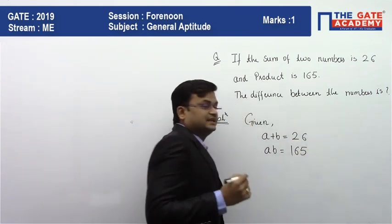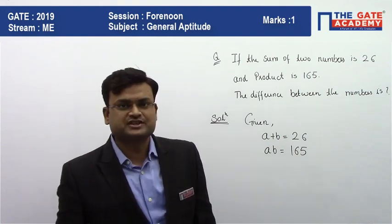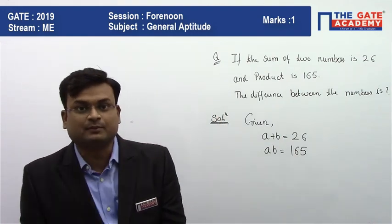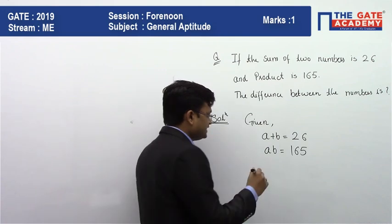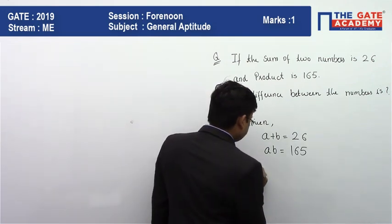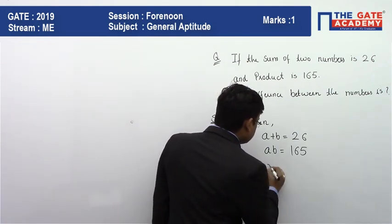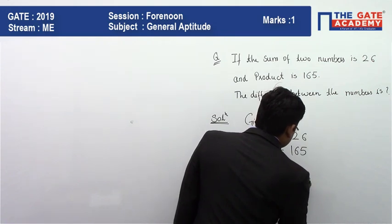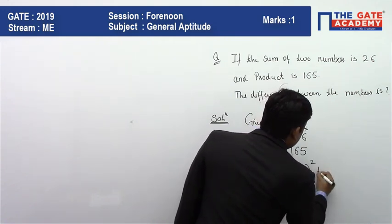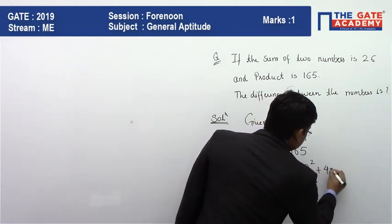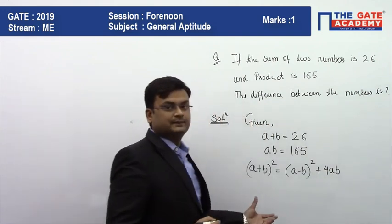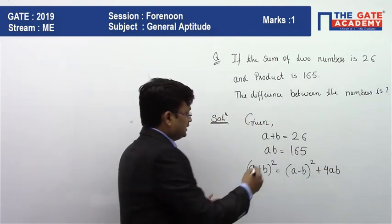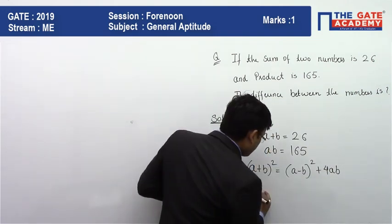You can solve this question without a formula also, but if you remember the formula it will help you. It is very simple: (a+b)² equals (a-b)² plus 4ab. If you remember this formula it will be easier, though you can solve it without the formula also. Substituting, we compute 26 squared.